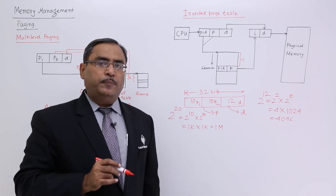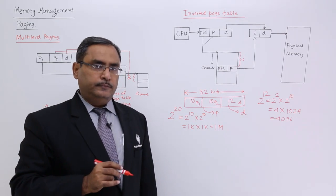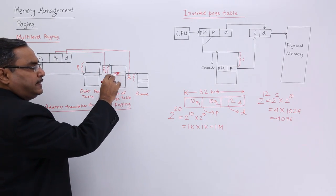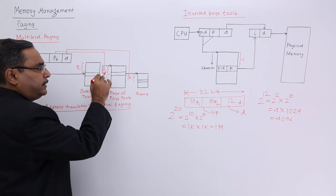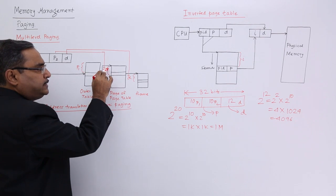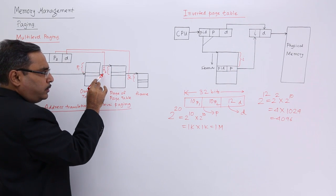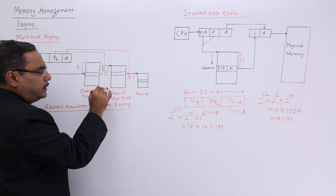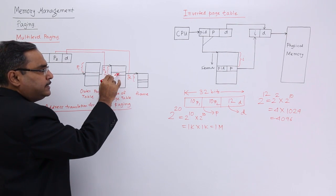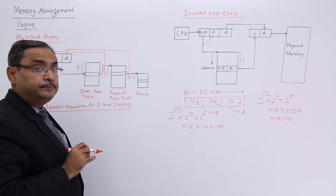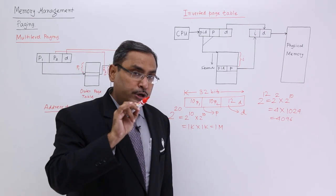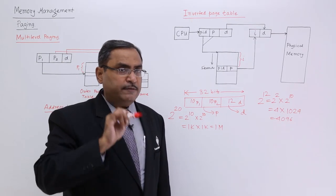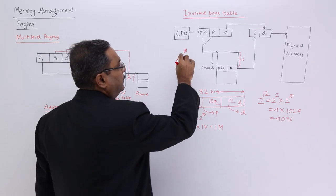Now let us come to the inverted page table. In all cases with an ordinary page map table, the page number is the location number and the content is the frame number. That is, page number is the location number of the page map table, and the content is the frame number.